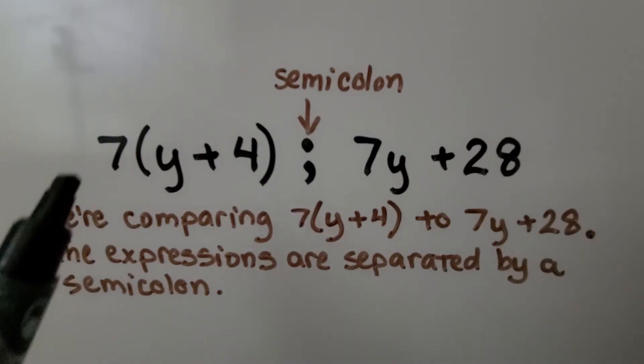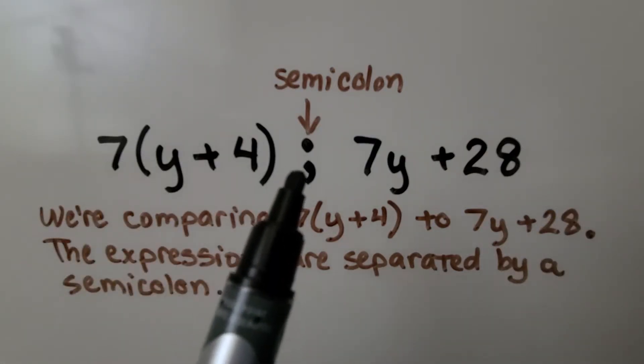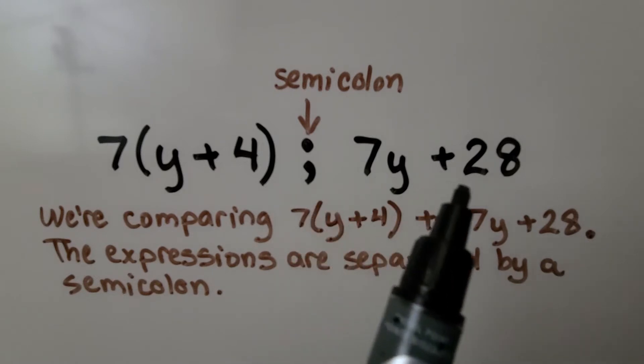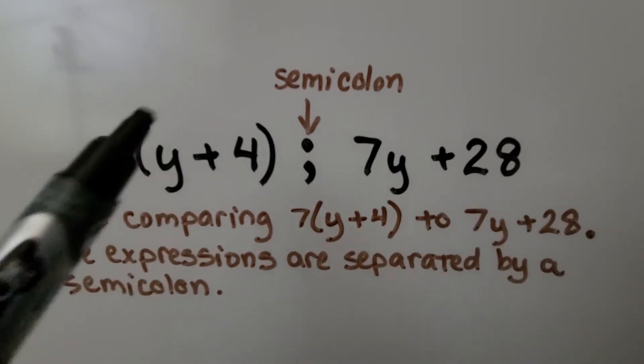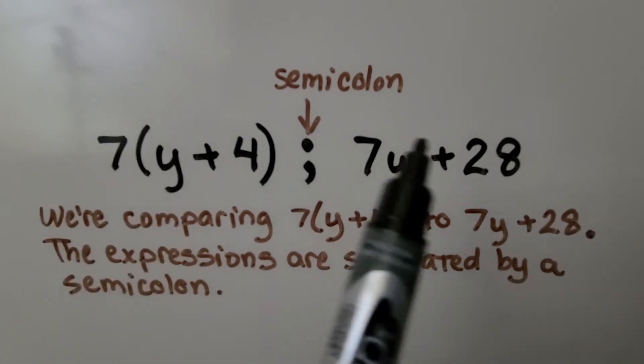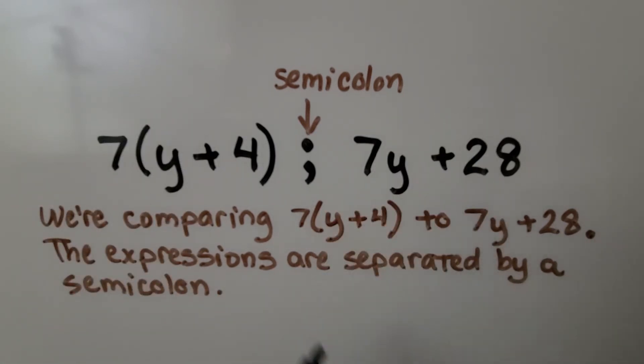Here we have 7 times y plus 4. We see a semicolon and then 7y plus 28. We're comparing 7(y+4) to 7y plus 28. And the expressions are separated by a semicolon.